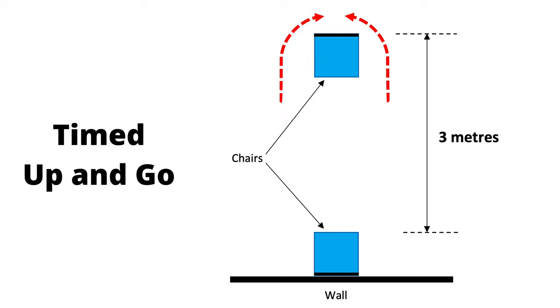The timed up and go is a great functional assessment as it combines the ability to stand from a seated position, walk a short distance to a point, then turn around and walk back to your chair and sit back down. To carry out this assessment you'll need a chair against the wall as your start point and a marker three meters away from the front of the chair to walk around. Ideally this would be a second chair so you have the chance to hold on to the back of it for balance as you walk around it and change direction, but this can be a cone or other marker on the floor.